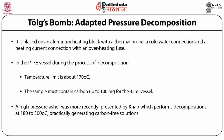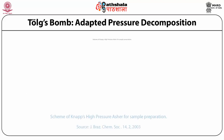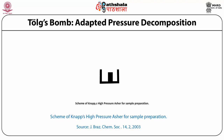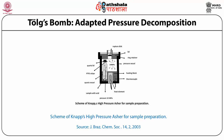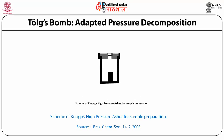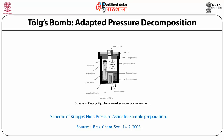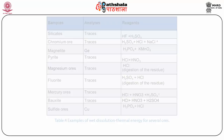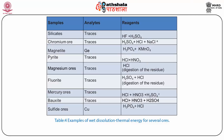A high pressure Asher was more recently presented by NAPS, which performs decomposition at 180 to 300 degrees centigrade, practically generating a carbon-free solution — developed to overcome the limitations of the Tög bomb. The NAPS high pressure Asher consists of a high pressure vessel which can resist up to 4 MPa of pressure. It has a heating block made of a heating element and thermocouple. Inside the high pressure vessel is a quartz vessel where the sample and acid are placed. The quartz vessel has a quartz lid with a PTFE strip, and also contains a rupture disc — if pressure exceeds the limit, the rupture disc releases.